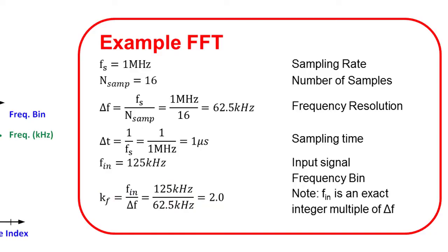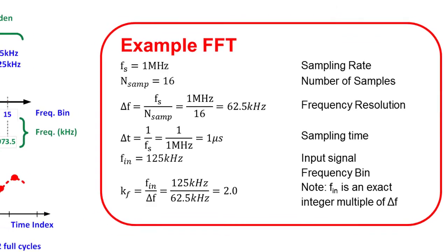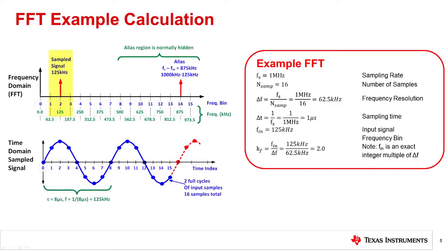Notice that in this case, the frequency bin is an integer because the input frequency is an exact integer multiple of the frequency resolution. So the sampled signal generates a frequency component in the second bin at exactly 125 kilohertz. The math for the translation works out nicely in this example, as the frequency bin is exactly 2.